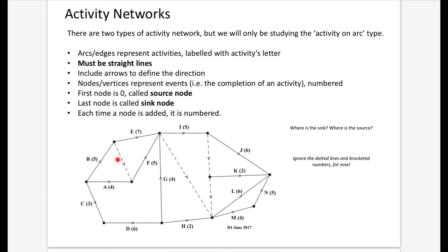Ignore the dotted lines and the bracketed numbers for now. Activity on arc networks must use straight lines — no curved lines and no lines crossing over each other. We include arrows to define the direction of flow from the start to the end of the project. The nodes or vertices represent events, i.e. the completion of an activity, and are usually numbered. In recent mark schemes, nodes are drawn without numbers, so don't worry too much about numbering.